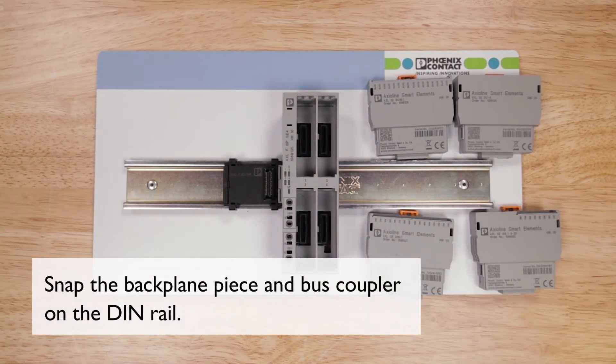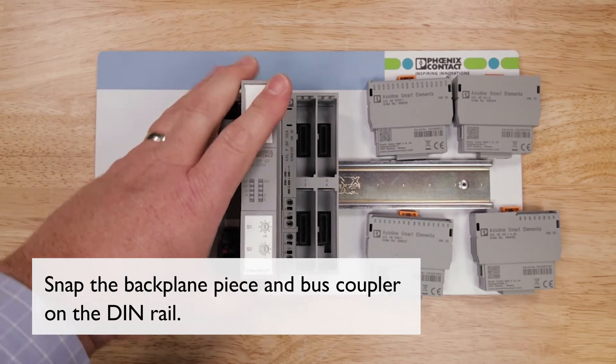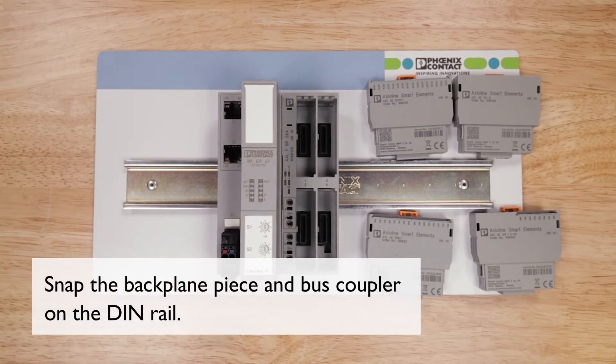The next step is to take the bus coupler and snap that onto the rail. This makes a good, strong connection so that you can't pull the modules apart.